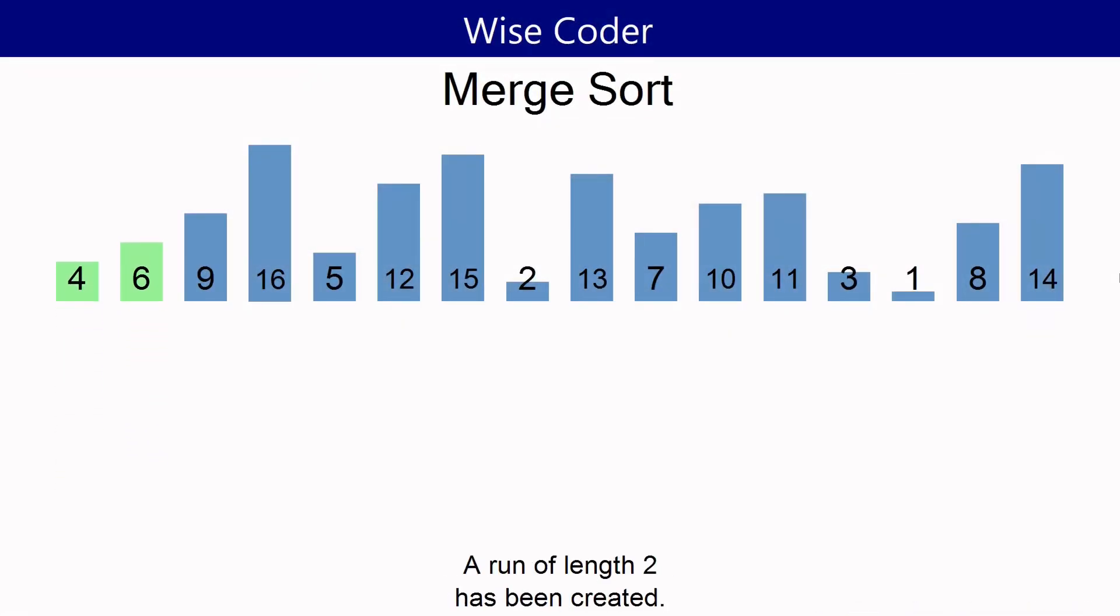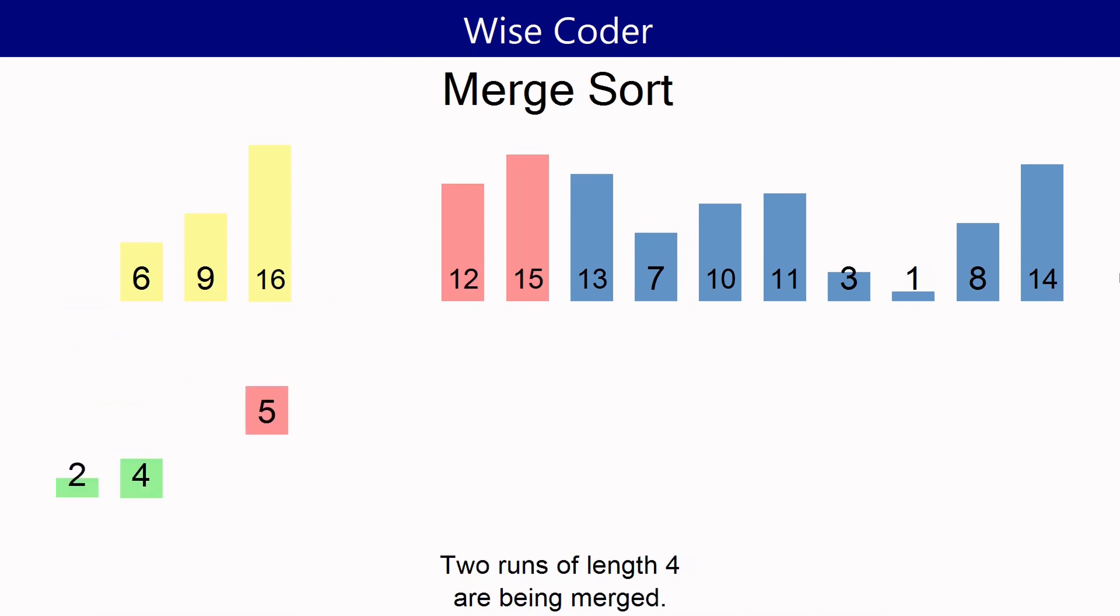Join me in observing the Merge Sort animation. Merge Sort functions by iteratively combining two pre-sorted sequences. In this animation, one sequence is highlighted in yellow, while the other is in red. Elements from both sequences are methodically merged into a green sorted sequence, which is twice as large. This process continues until the entire set is organized.